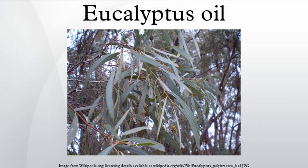Significant producers of true eucalyptus oil include South Africa, Portugal, Spain, Brazil, Australia, Chile, and Swaziland. Global production is dominated by Eucalyptus globulus; however, Eucalyptus cochi and Eucalyptus polybractea have the highest cineol content, ranging from 80 to 95%.